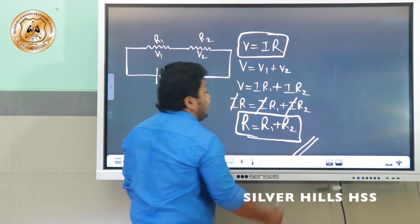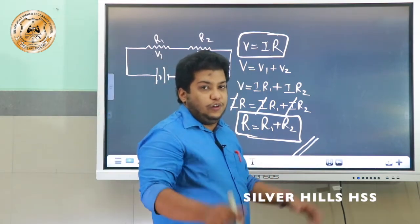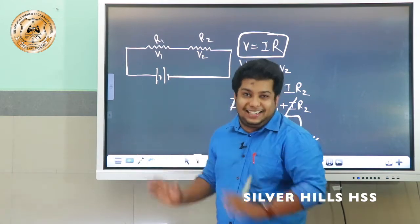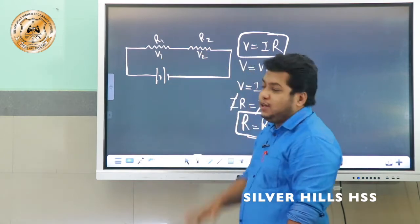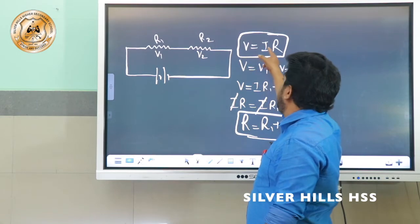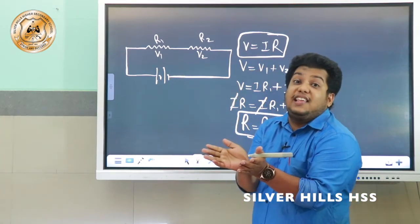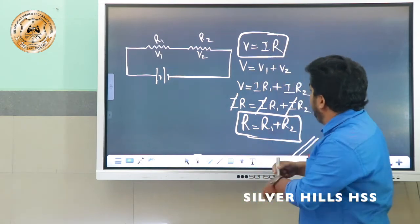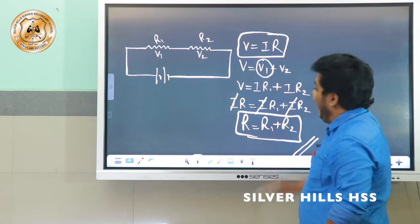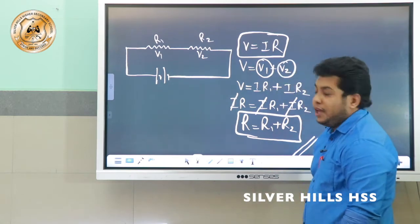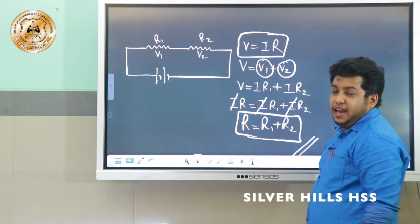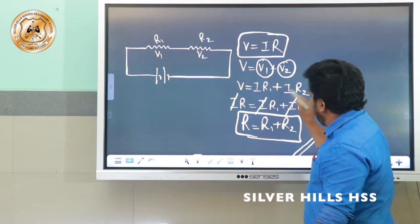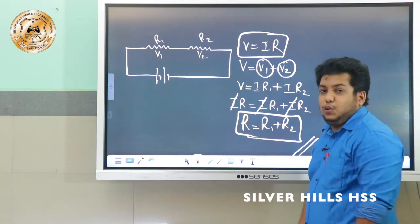This is the effective resistance in series combination. When resistors are connected in series, the effective potential difference across each resistance will be different — V1 across R1 and V2 across R2. According to Ohm's law, V is equal to IR, and the total potential is V equal to V1 plus V2. So V1 is IR1, V2 is IR2, giving IR equal to IR1 plus IR2. Cancelling I, R is equal to R1 plus R2.